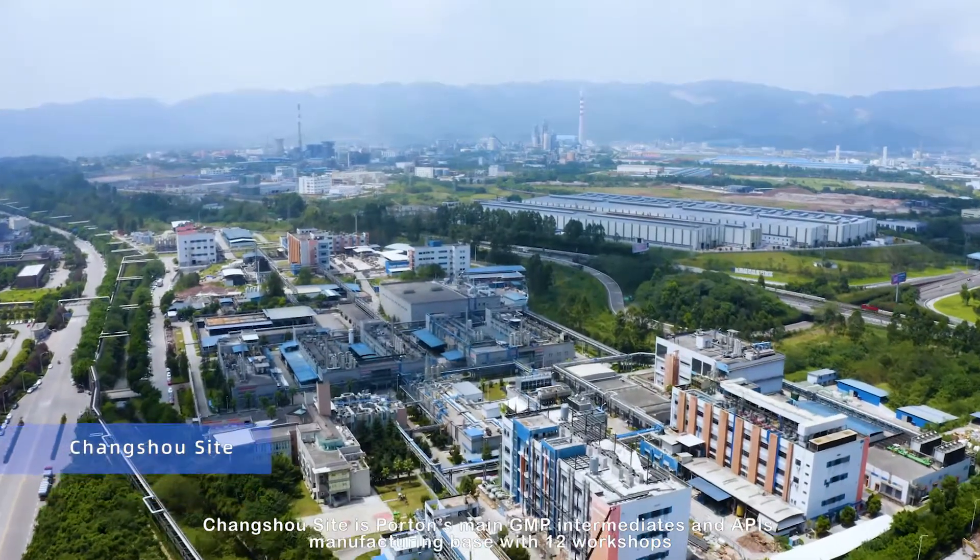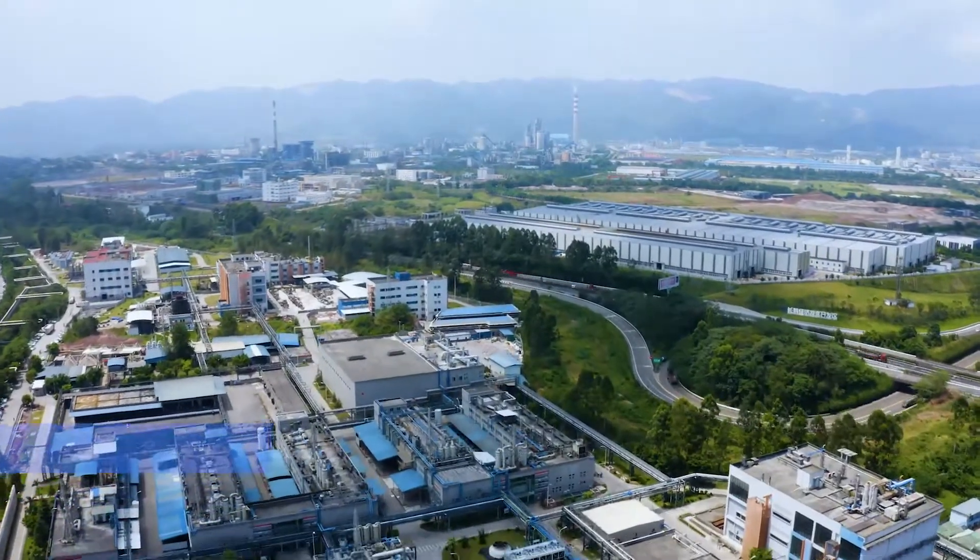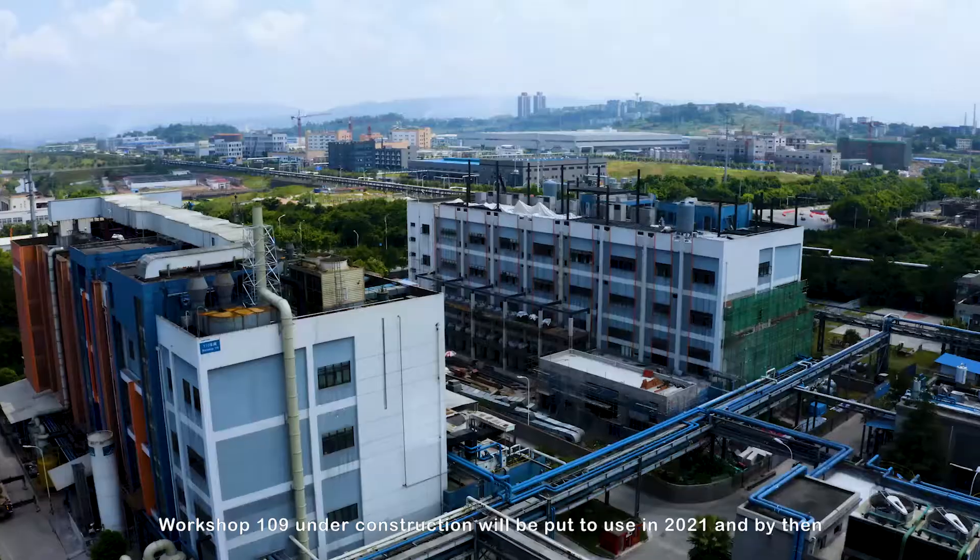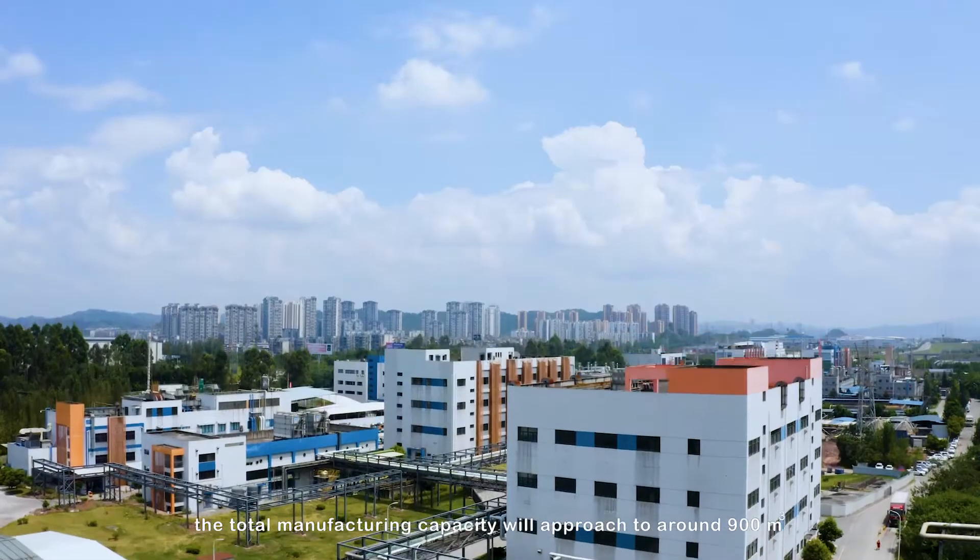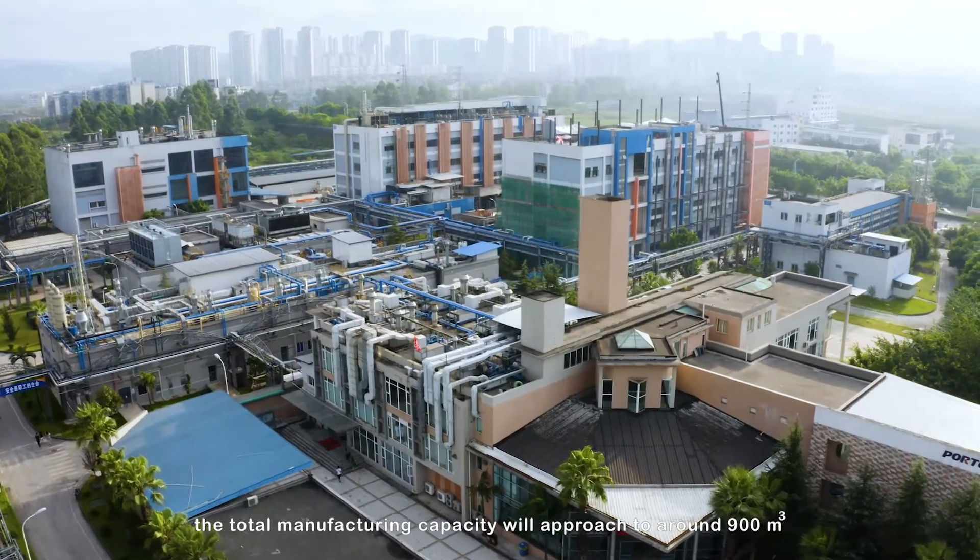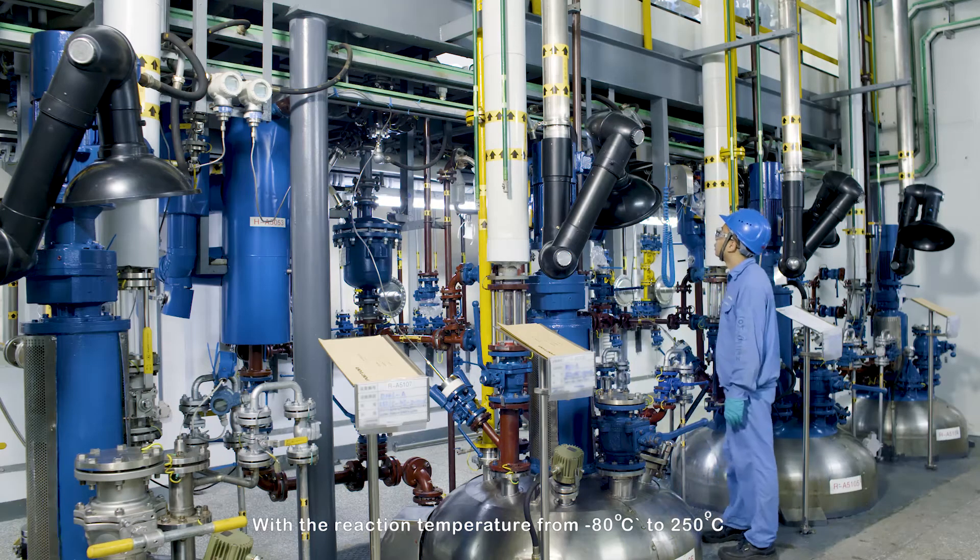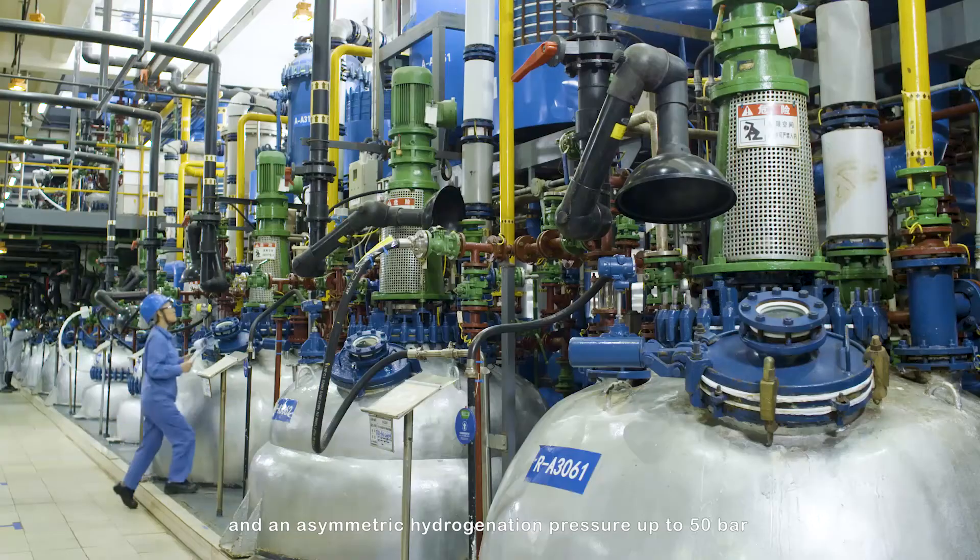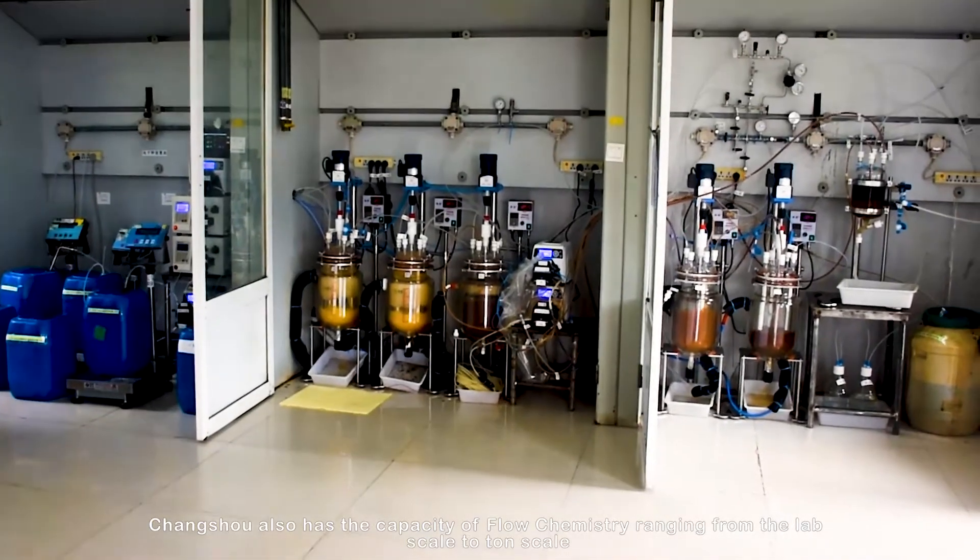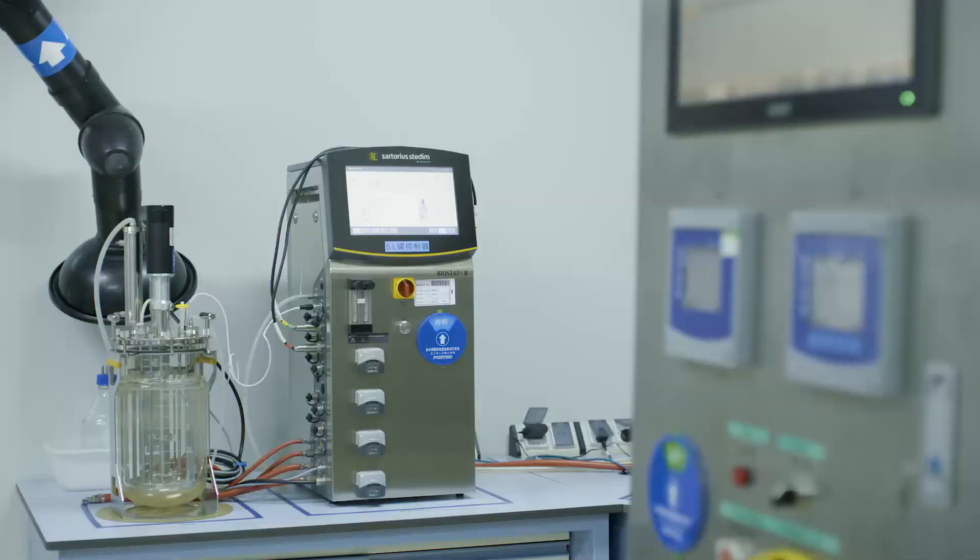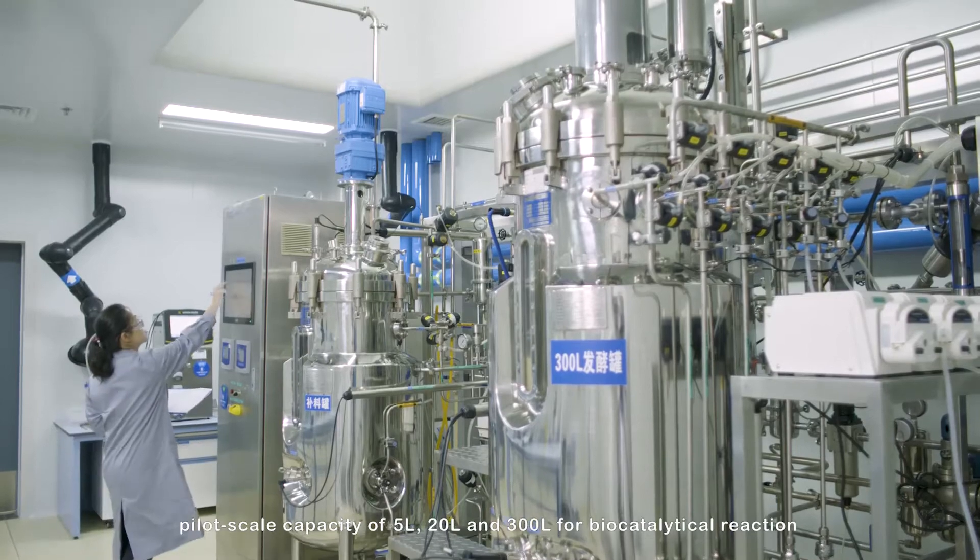Changshou site is Porton's main GMP intermediates and APIs manufacturing base with 12 workshops. Workshop 109 under construction will be put to use in 2021, and by then, the total manufacturing capacity will approach to around 900 cubic meters. With a reaction temperature from minus 80 to 250 centigrade degree, and an asymmetric hydrogenation pressure up to 50 bar, Changshou also has the capacity of flow chemistry ranging from the lab scale to ton scale, pilot-scale capacity of 5-liter, 20-liter, and 300-liter for biocatalytical reaction.